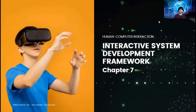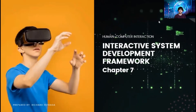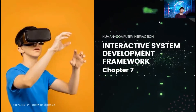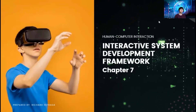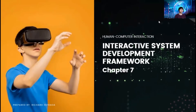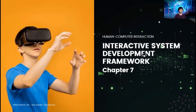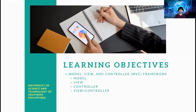Hello everybody. We are now on Chapter 7 of Human-Computer Interaction. For this chapter, we will be learning about the interactive system development framework — how different applications are being developed, how they are implemented, and what kind of framework developers use in order to create a really good system.